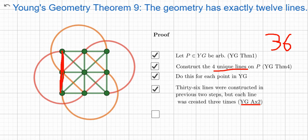Was first created when we did this point P, and it was created again when we did this point, and it was created a third time when we constructed the four lines on this point. So of these 36 lines, they've all been constructed three times each.